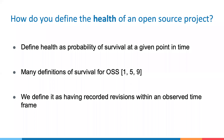So what does it mean for an open source project to be healthy? We define health as the probability of a project's survival at a given point in time. But what does it mean for a software project to survive? There are many working definitions of survival for open source software. We define survival as having recorded revisions in a repository's history during an observed time frame. A project is considered alive upon observing its first revision, and dead upon observing its last revision within the time frame.